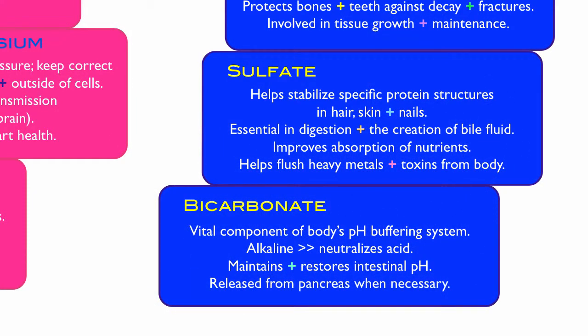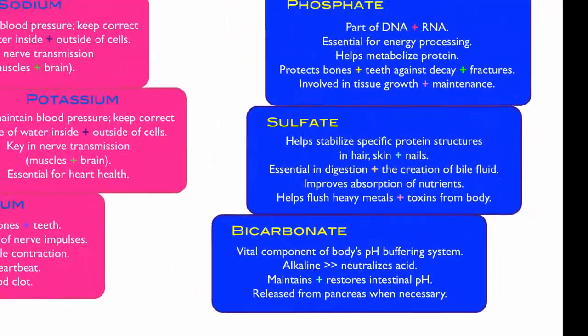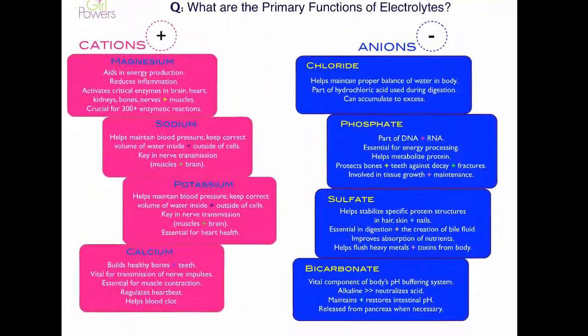Bicarbonate is a vital component of the body's pH buffering system. Whereas all electrolytes contribute to maintaining the pH of your body, bicarbonate's primary function is specifically that. It's highly alkaline, so it neutralizes acid. Its primary function is to maintain and restore intestinal pH, and it's released from your pancreas when your body needs it.